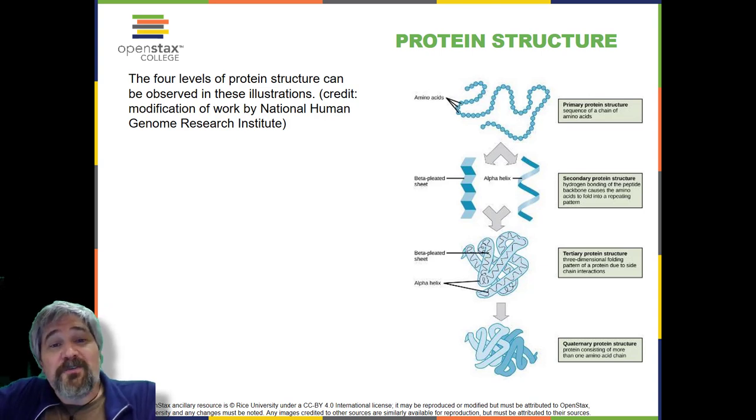Folding patterns resulting from interactions between the non-R group portions of amino acids give rise to the secondary structure of the protein. The most common are the alpha helix and beta pleated sheet structures. Both structures are held in shape by hydrogen bonds. In the alpha helix, the bonds form between every fourth amino acid and cause a twist in the amino acid chain. In the beta pleated sheets, the pleats are formed by hydrogen bonding between atoms on the backbone of the polypeptide chain. The R groups are attached to the carbons and extend above and below the folds of the pleat. The pleated segments align parallel to each other and hydrogen bonds form between the same pairs of atoms on each of the aligned amino acids.